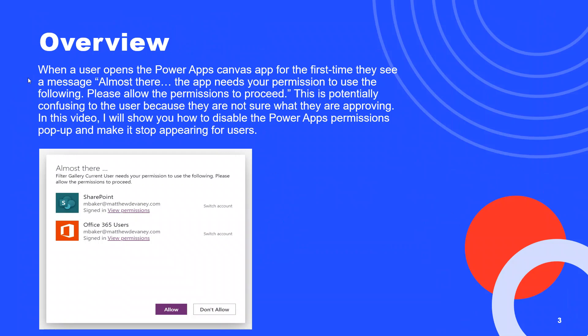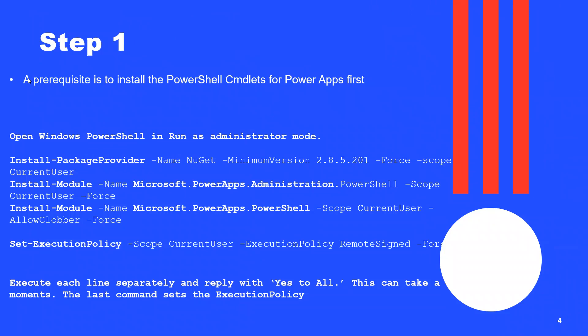This can be done using PowerShell. We need to open Windows PowerShell in Run as Administrator mode and then install a few commands as prerequisites. First, we need to install the package provider — here is the command for that. Then we need to install a few modules: Microsoft.PowerApps.Administration and Microsoft.PowerApps.PowerShell.